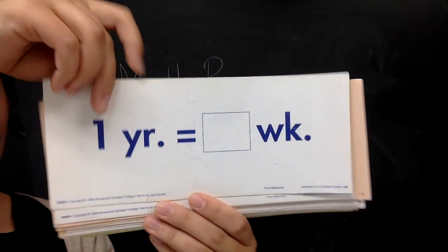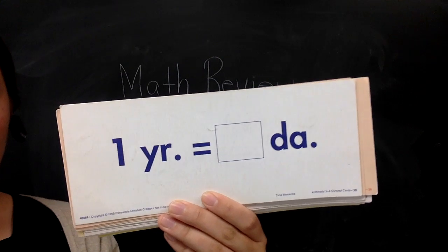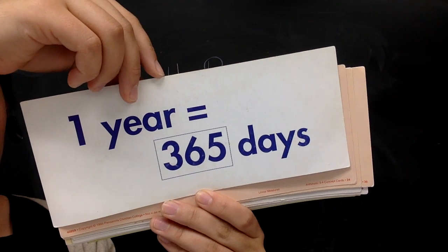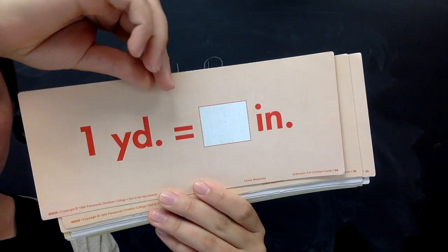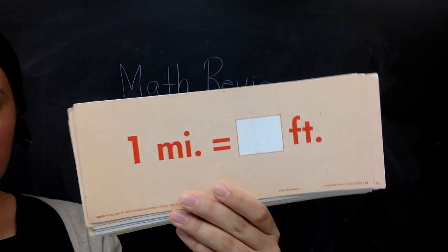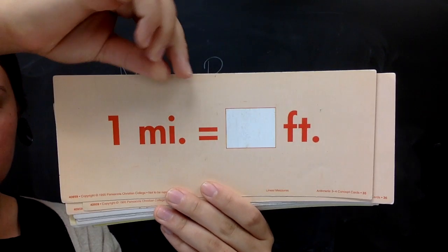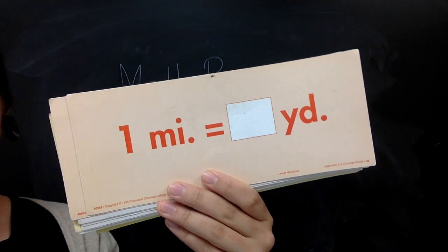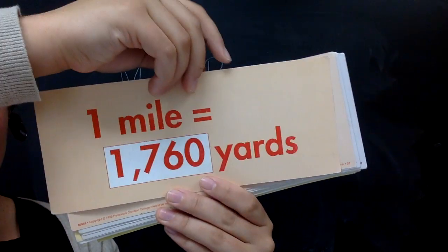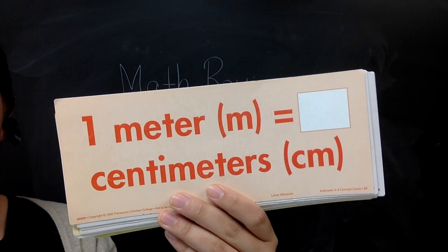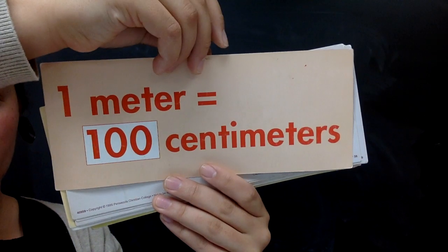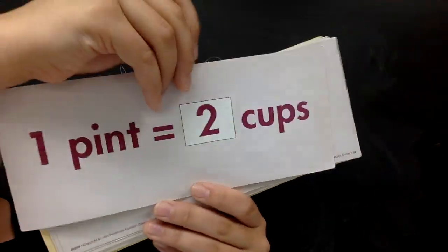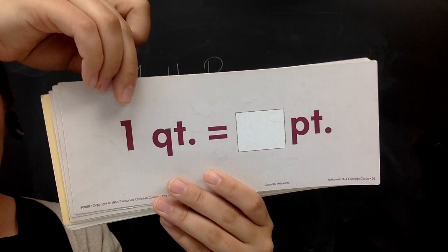One year equals how many weeks? About 52. One year equals how many days? 365. One yard equals how many inches? 36. One mile equals how many feet? 5,280. One mile equals how many yards? 1,760. One meter equals how many centimeters? 100. One pint equals how many cups? 2.